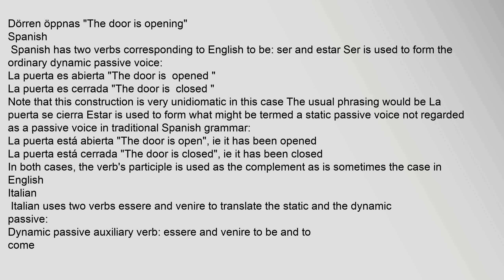Spanish has two verbs corresponding to English "to be": "ser" and "estar." "Ser" is used to form the ordinary dynamic passive voice: e.g., "La puerta es abierta" (The door is opened), though this construction is very unidiomatic and the usual phrasing would be "La puerta se cierra." "Estar" is used to form what might be termed a static passive voice: e.g., "La puerta está abierta" (The door is open, i.e., it has been opened) and "La puerta está cerrada" (The door is closed, i.e., it has been closed).